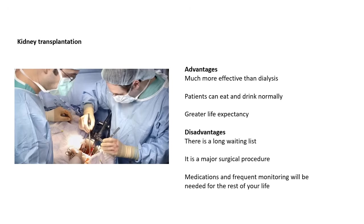A kidney transplant is much more effective than dialysis. A real kidney works much better than a machine. Patients can eat and drink normally and have a greater life expectancy. Disadvantages: there is a long waiting list and many people may die while waiting. It's a major surgical procedure, which is risky in itself. Once you have your new kidney, for the rest of your life you'll need to take medicines — immunosuppressants — to stop your body from rejecting the kidney, to control infection, and you'll need frequent monitoring for the rest of your life.